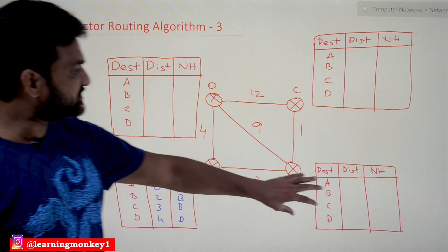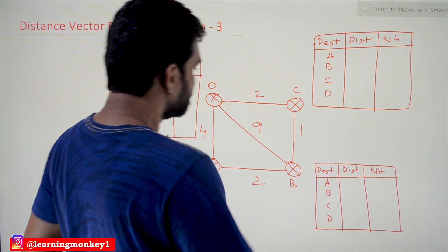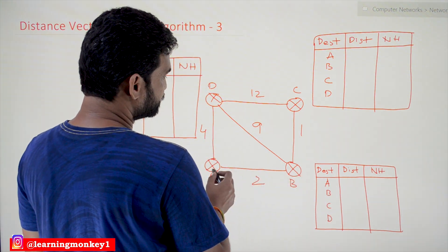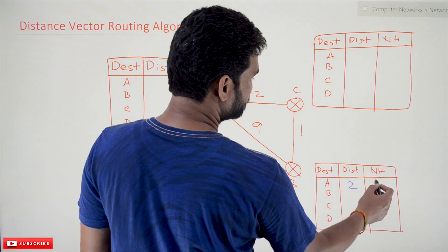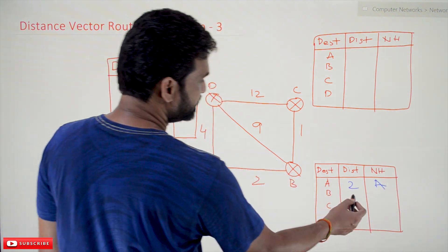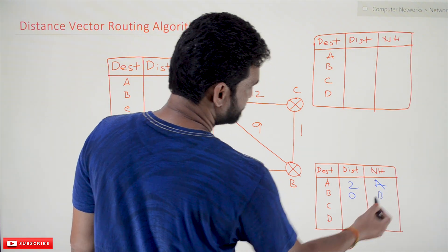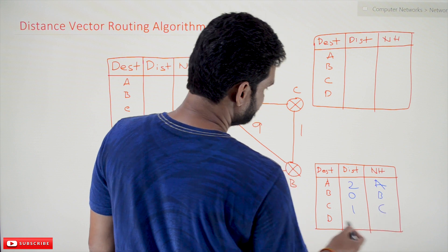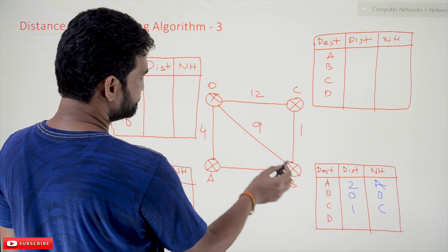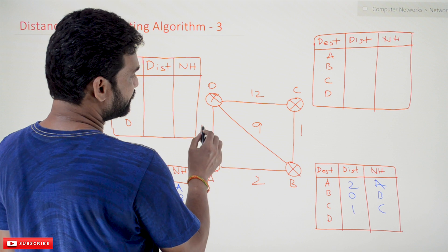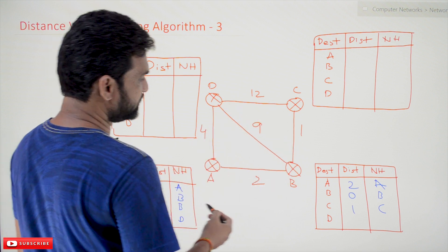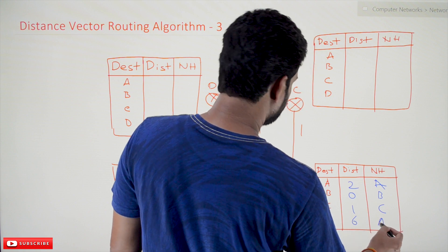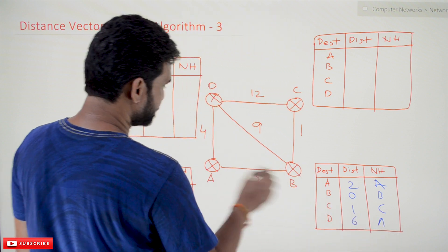Now the table at router B: B to A — solving directly, next hop is A. B to B is 0, next hop B. B to C is 1, next hop C. B to D — possibilities are 9, then 2 plus 4 = 6, and 1 plus 12 = 13, so the smallest is 6 and the next hop is A.